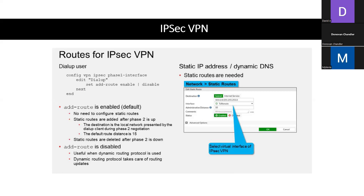We have phase one and phase two that we talked about at the fundamental level. Phase one needs that remote gateway, because that's going to be used to connect or dial up to that peer. Whenever you set that remote gateway when setting up phase one, it's going to add the virtual interface we just spoke about, but it's also going to go ahead and add a user called dial-up. You can also enable add route.